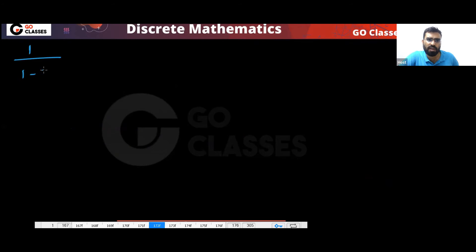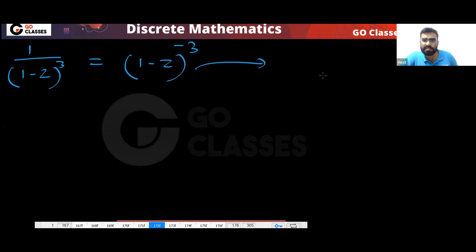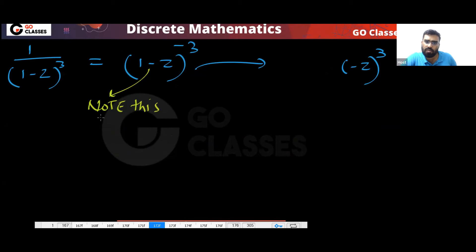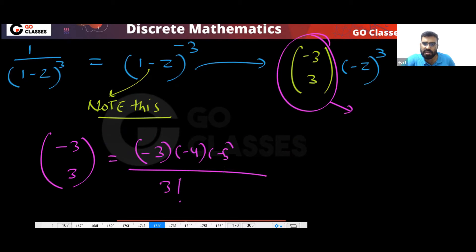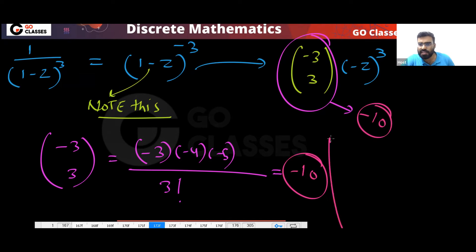For 1/(1-z)³, write it as (1-z)^(-3). The coefficient of z³ in this expansion is (-3 choose 3), which equals 10. So the coefficient of z³ from the first part is 10.